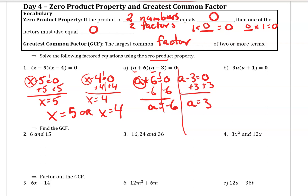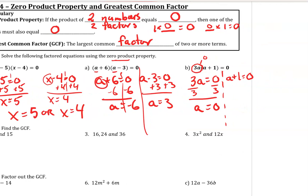On problem b, 3a is one of my factors and a plus 1 is my other factor. If 3a equals zero, divide each side by 3 to isolate the variable — 0 divided by 3 is zero, so a equals zero. For a plus 1, subtract 1 from each side, so a would equal negative 1.